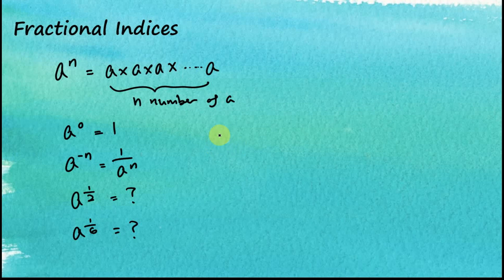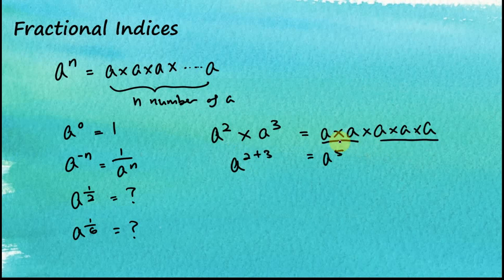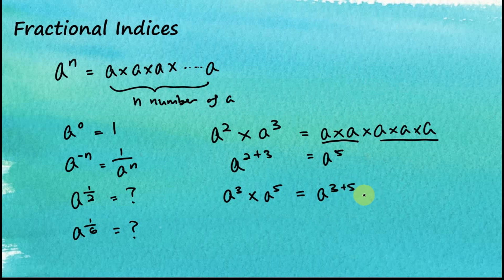Let's see this example. We have a squared times a cubed. We know that a squared is a times a, and a cubed is a times a times a, so in total we have 5 a's multiplied together, giving us a to the power of 5. From this we can deduce that a squared times a cubed equals a to the power of 2 plus 3, which equals a to the power of 5. Therefore, if we need to find a to the power of 3 times a to the power of 5, that equals a to the power of 3 plus 5, which is a to the power of 8.